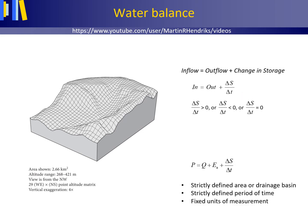As an example of a water balance, let's take a look at the water balance of the Krippsbach drainage basin or catchment in East Luxembourg. The catchment is shown as a block diagram of the digital elevation model here. This is the catchment boundary, this is the outlet point.